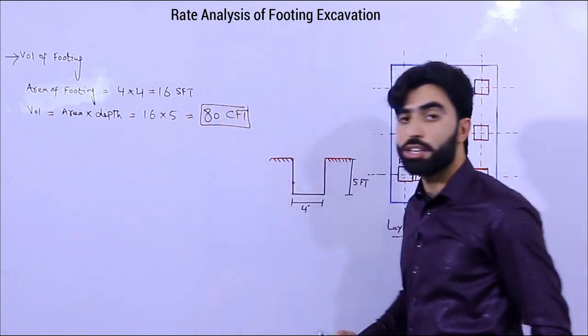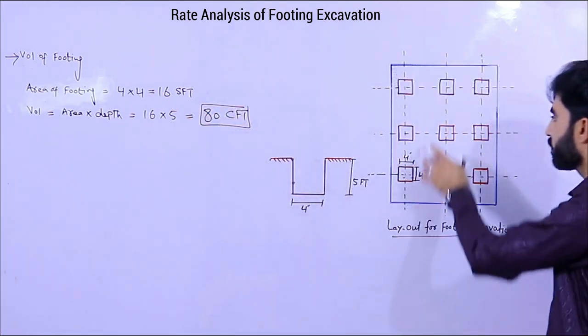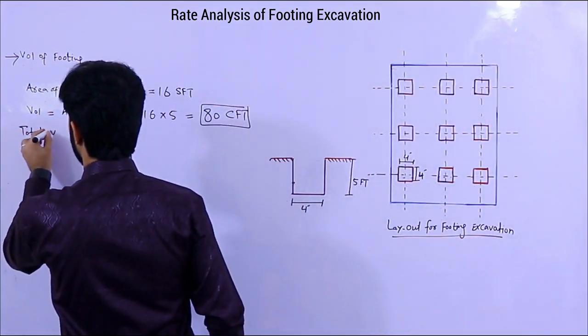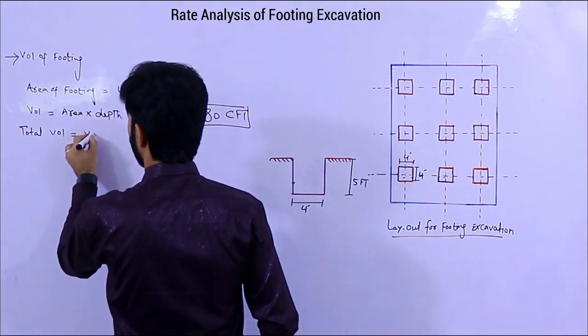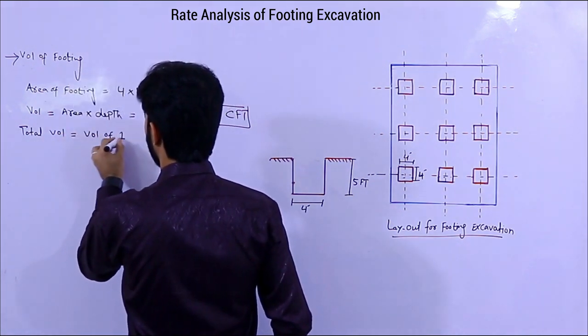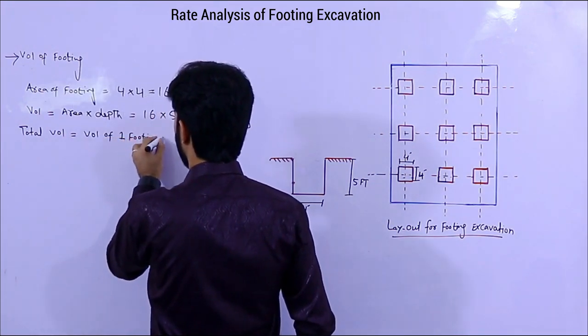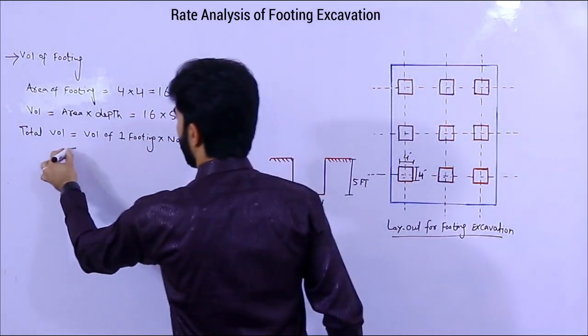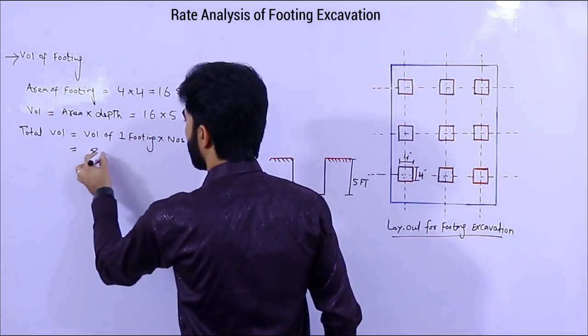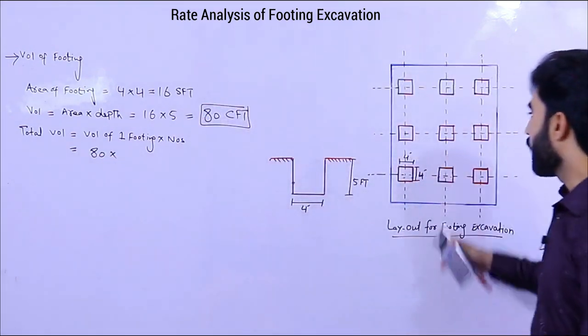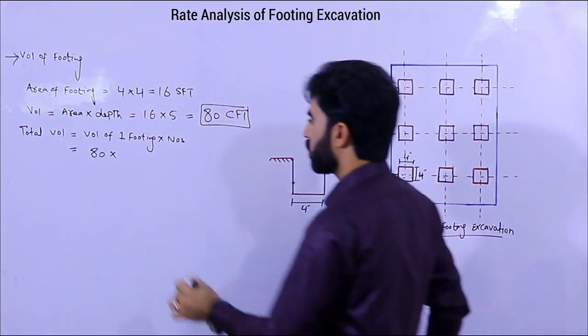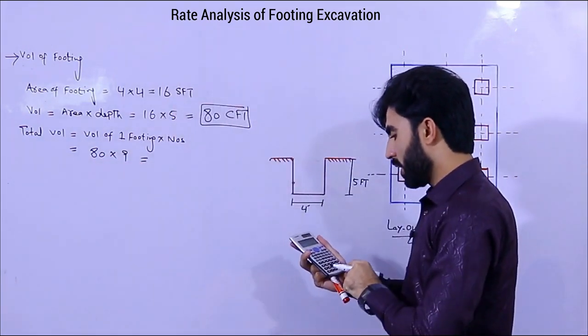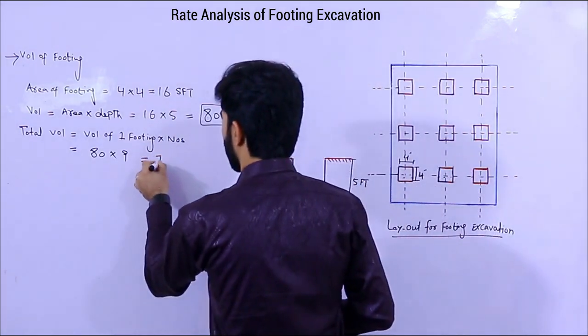Now I need the total volume of these footings. Total volume equals volume of one footing multiply number. Volume of one footing is 80 CFT, multiply we have 9 footings in this layout. So 80 multiply 9 equals 720 CFT.